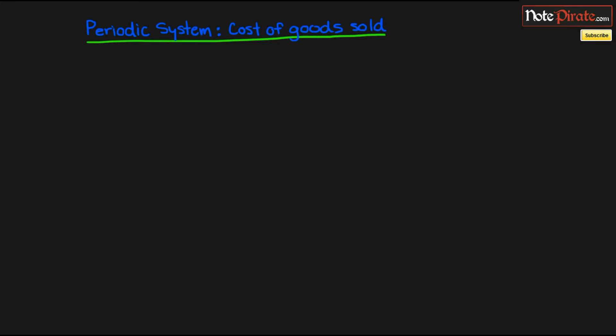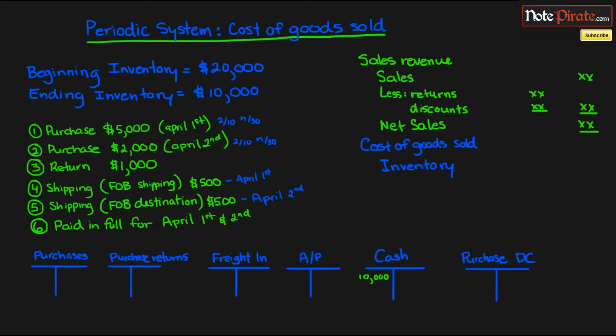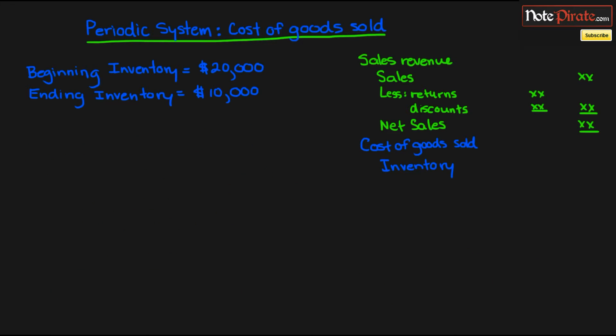Hey NinjaNote viewers, in one of our previous presentations we did cover an income statement for the Perpetual System. We're going to be doing one for the Periodic System, and you're going to be seeing all of this over the next few minutes.